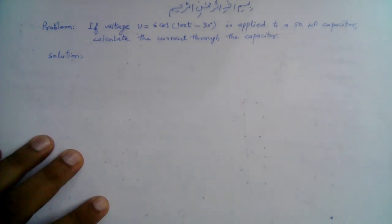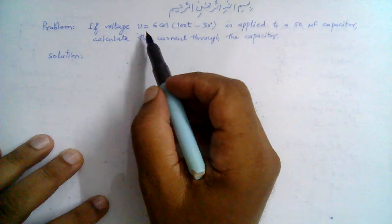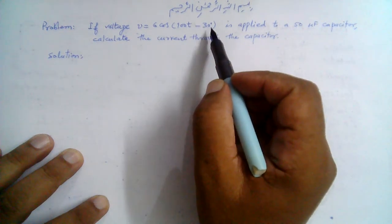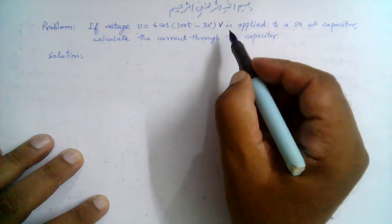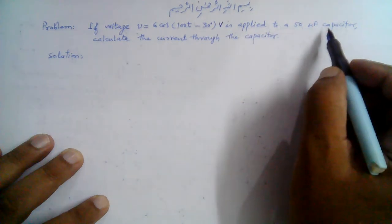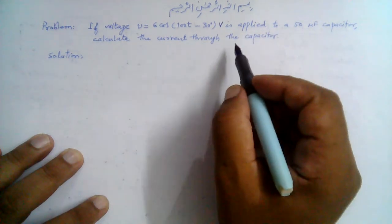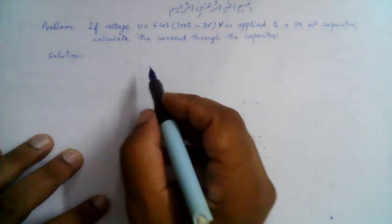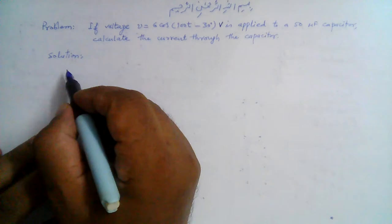Bismillahirrahmanirrahim, let's solve this problem. If a voltage V is equal to 6 cos(100T minus 30 degrees) volts is applied to a 50 microfarad capacitor, calculate the current through the capacitor.